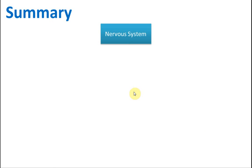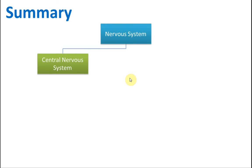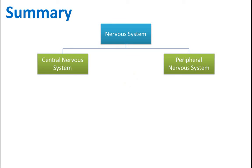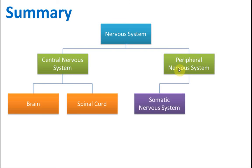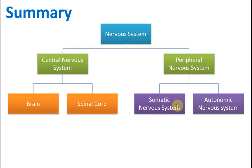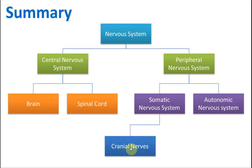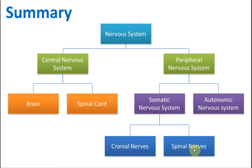In summary, the nervous system consists of the central nervous system and the peripheral nervous system. The central nervous system consists of the brain and the spinal cord. The peripheral nervous system consists of the somatic nervous system, which controls voluntary actions and includes cranial nerves from the brain and spinal nerves from the spinal cord, and the autonomic nervous system, which controls involuntary actions.